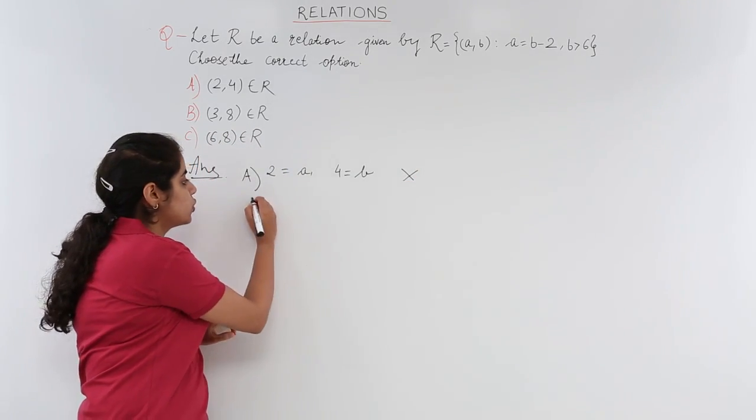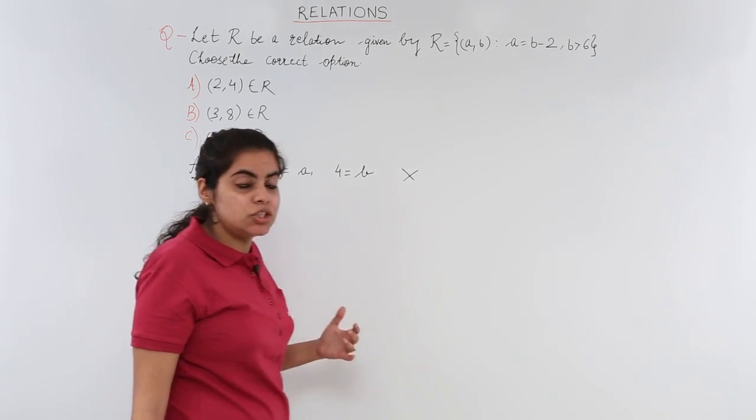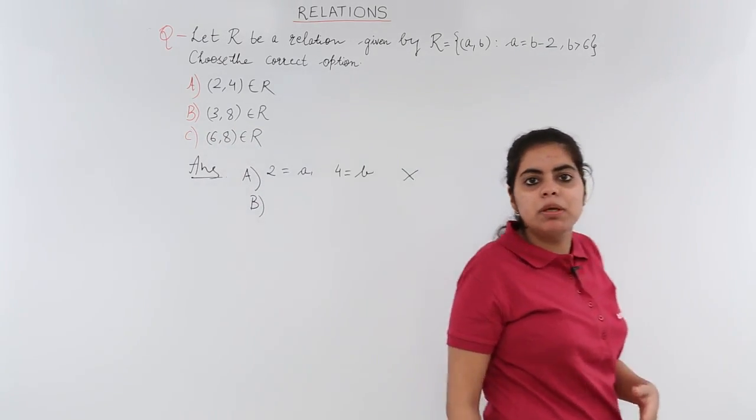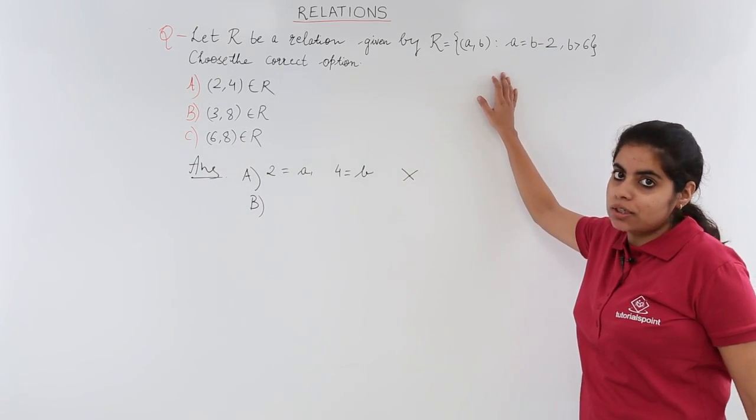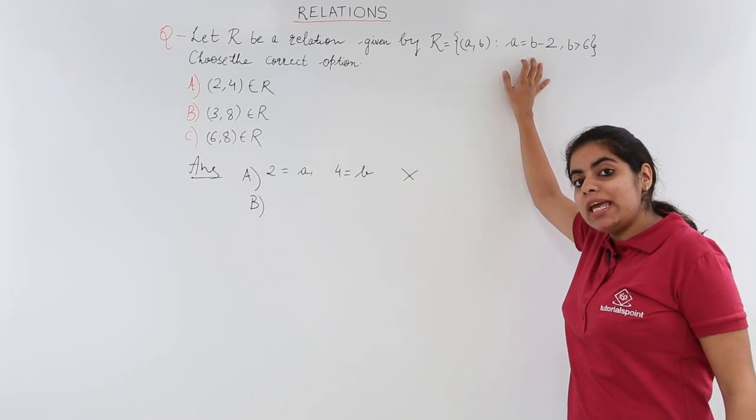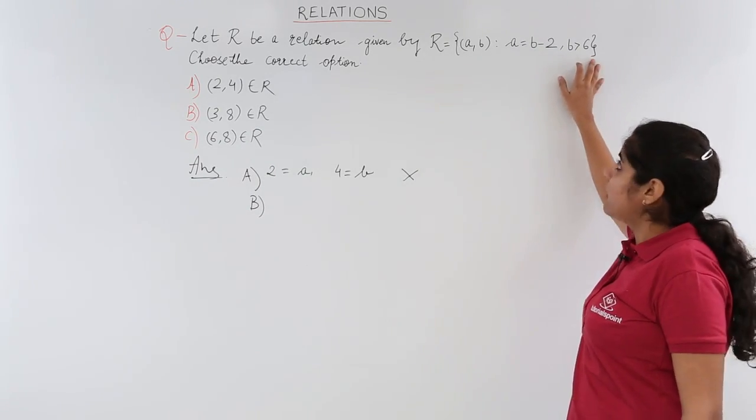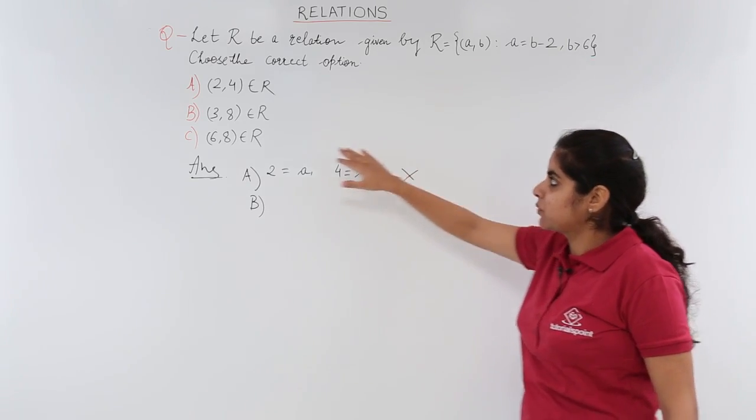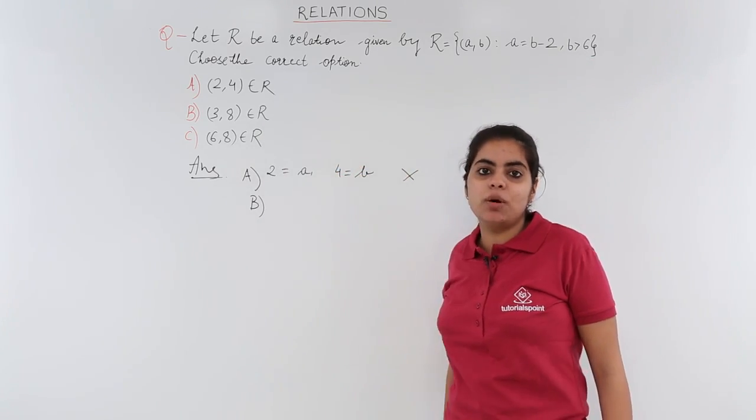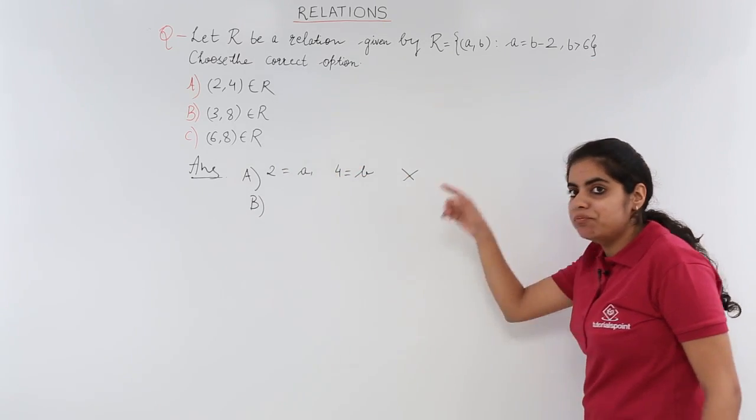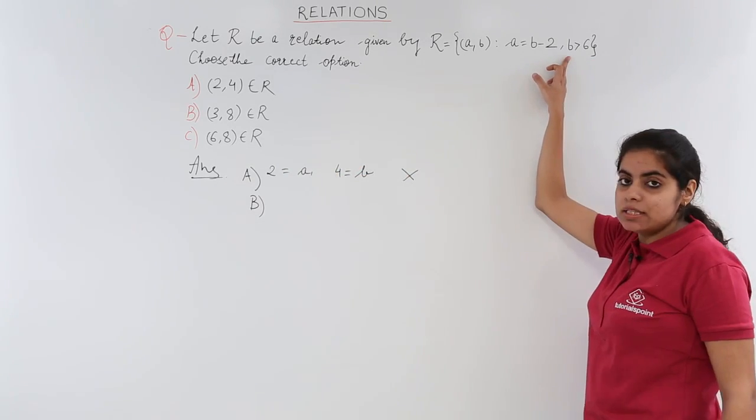Now let's move to option B and check its validity. I again repeat the relation: a equals b minus 2 where b is greater than 6. The option is (3, 8) belongs to R. B is 8 which is greater than 6, well and good, but is a equal to b minus 2?